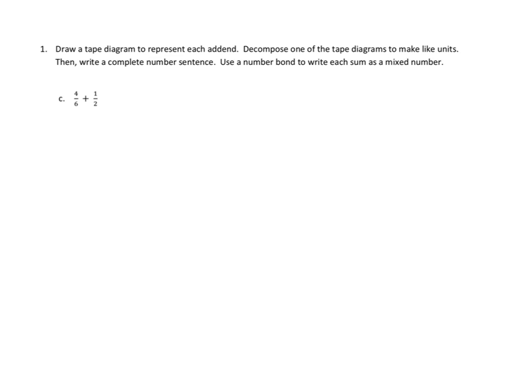Let's take a look at problem number one. Problem number one reads as follows: Draw a tape diagram to represent each addend. Decompose one of the tape diagrams to make like units. Then write a complete number sentence. Use a number bond to write each sum as a mixed number, and that part is the only part that's really new tonight. Otherwise, it's very similar to what we did last night in Lesson number 20. So let's take a look at problem one C. We're asked to add two tape diagrams, four sixths and one half. So again, as with last night, I want to draw my two tape diagrams right on top of each other and right at the same length so that I'm really clear on what the sizes are. It'll make it easier for me to decompose.